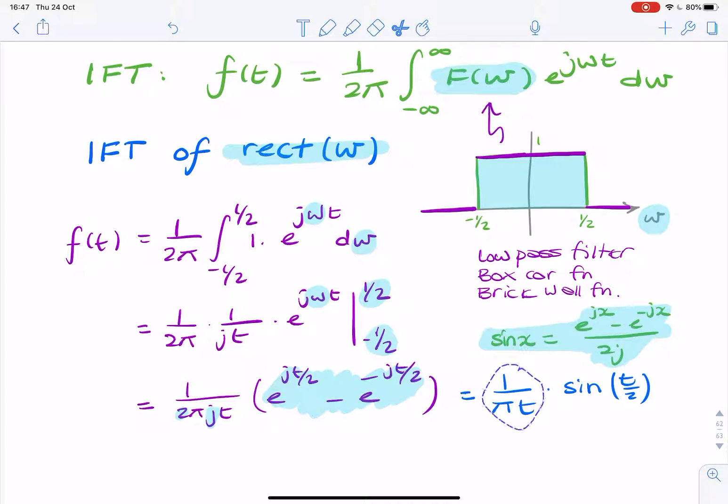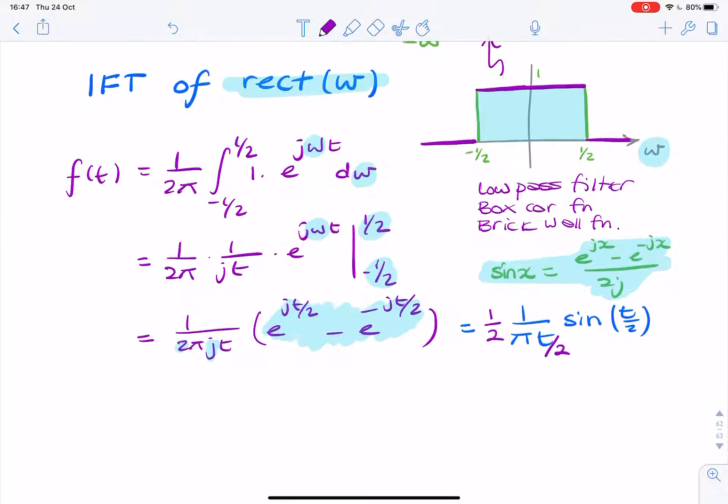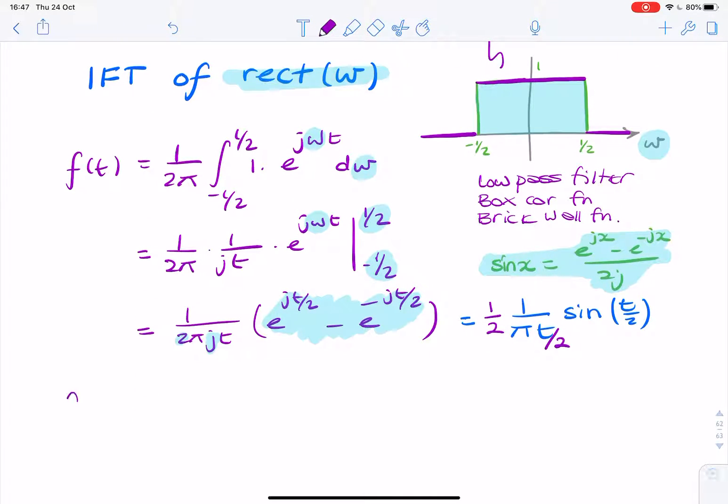If I were to multiply by 1/2 and then divide that by 2, then the expression hasn't changed at all. So now I can rewrite it as f(t) equals 1 over 2π times sin(t/2) divided by t/2. And now that is my sinc function. So my answer is 1 over 2π times sinc(t/2).